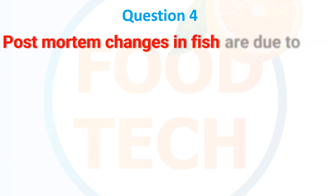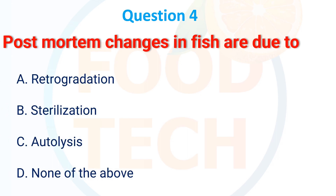Question 3: Postmortem changes in fish are due to — a. Retrogradation. b. Sterilization. c. Autolysis. d. None of the above. The correct answer is autolysis.